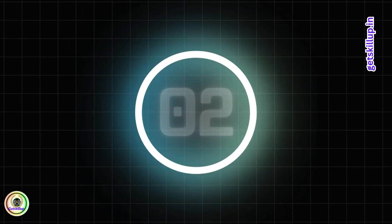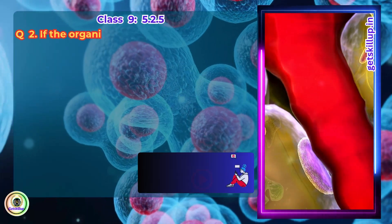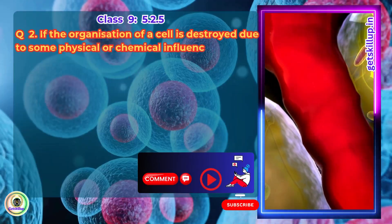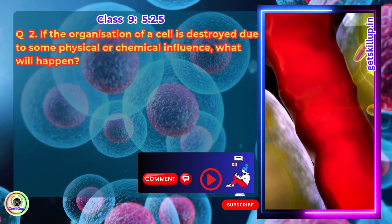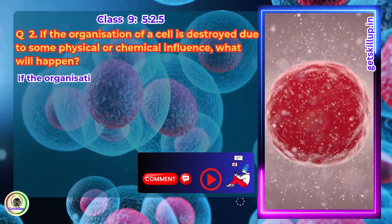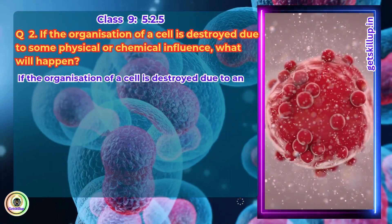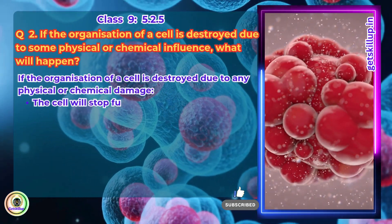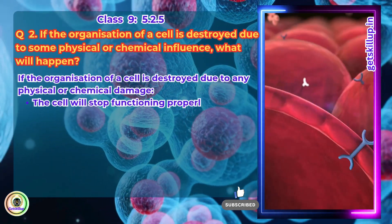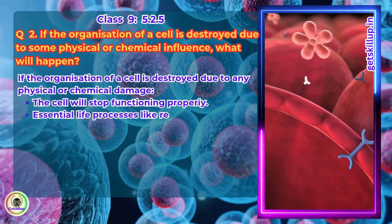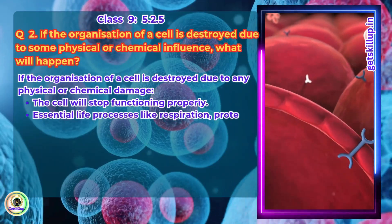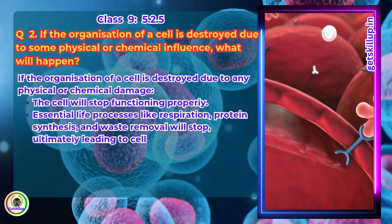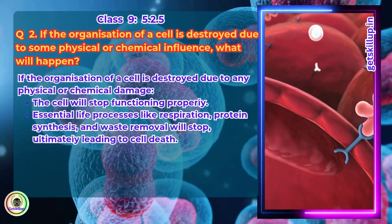Question 2. If the organization of a cell is destroyed due to some physical or chemical influence, what will happen? If the organization of a cell is destroyed due to any physical or chemical damage, the cell will stop functioning properly. Essential life processes like respiration, protein synthesis, and waste removal will stop, ultimately leading to cell death.